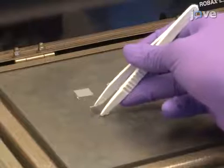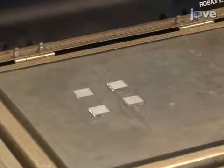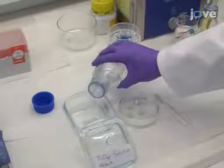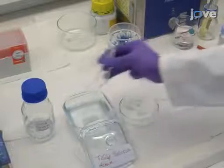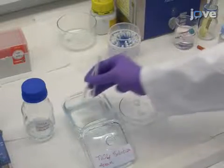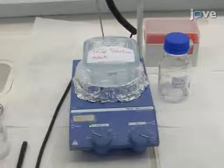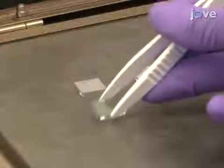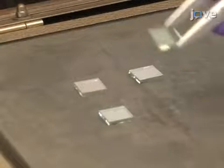Anneal the titanium film at 500 degrees Celsius for 30 minutes to yield a mesoporous titanium oxide film. Then immerse the sample in a 40 millimolar solution of titanium chloride in distilled water. Treat the samples at 70 degrees Celsius for 20 minutes. Anneal the titanium chloride treated sample at 450 degrees Celsius for another 30 minutes.